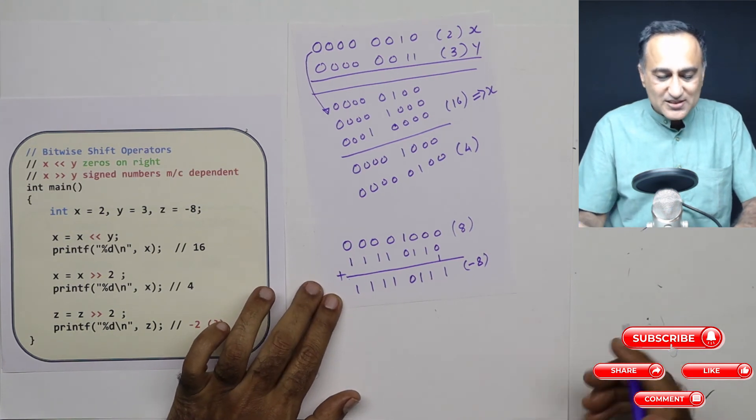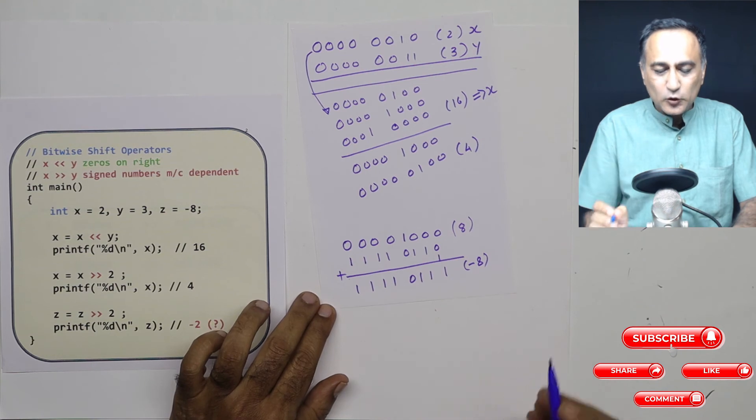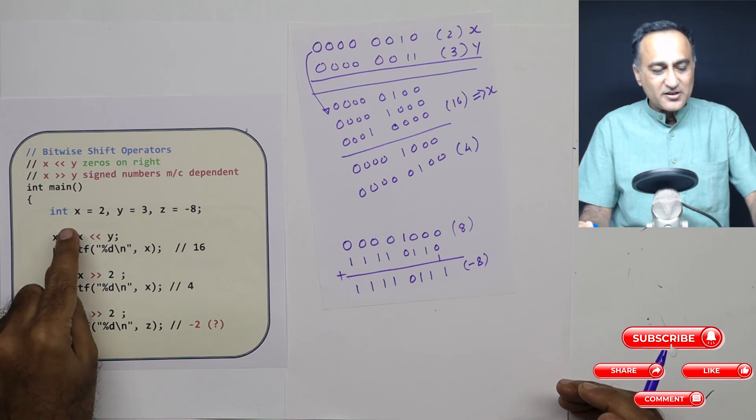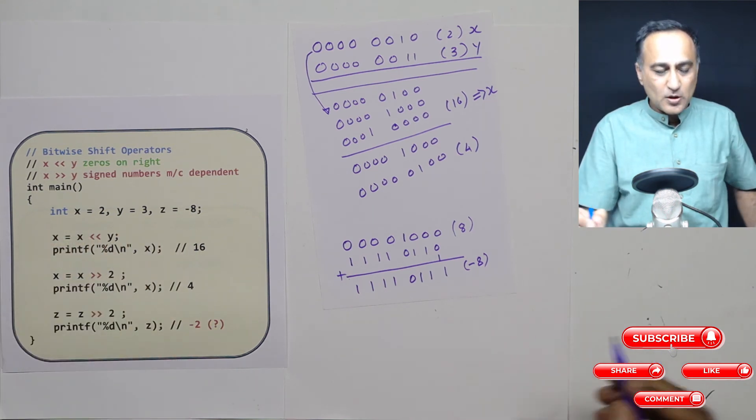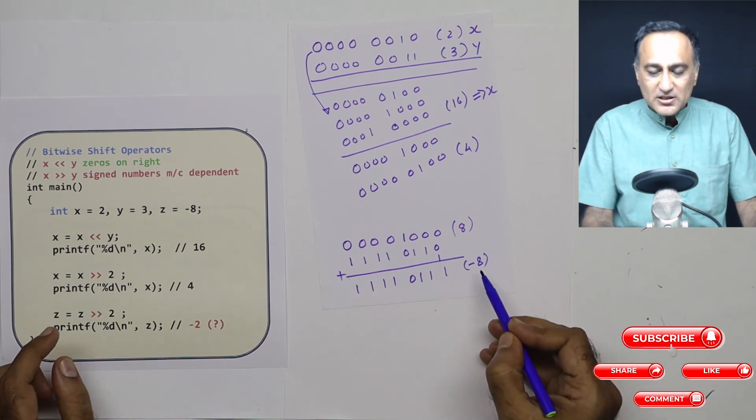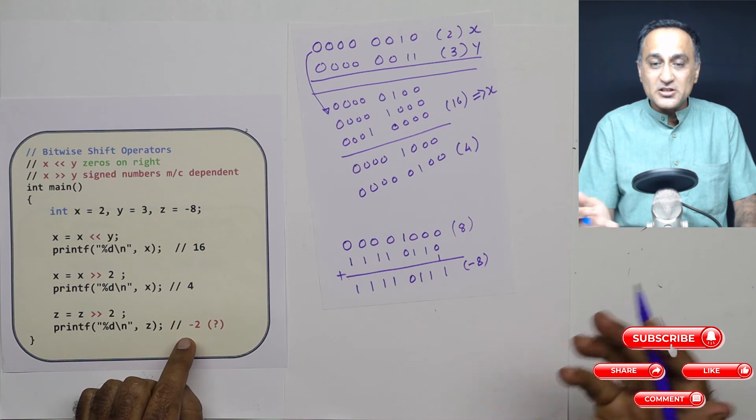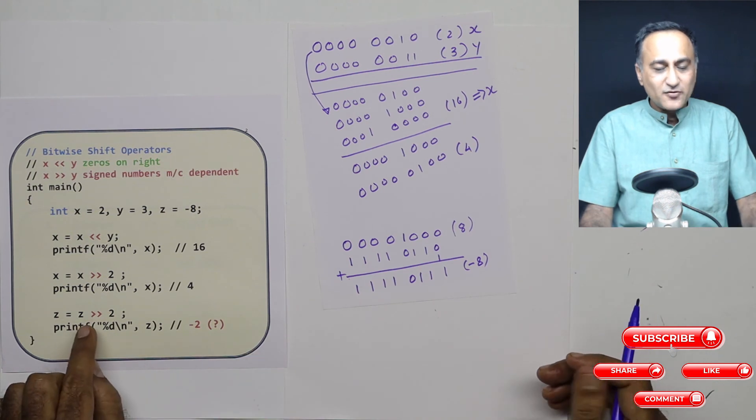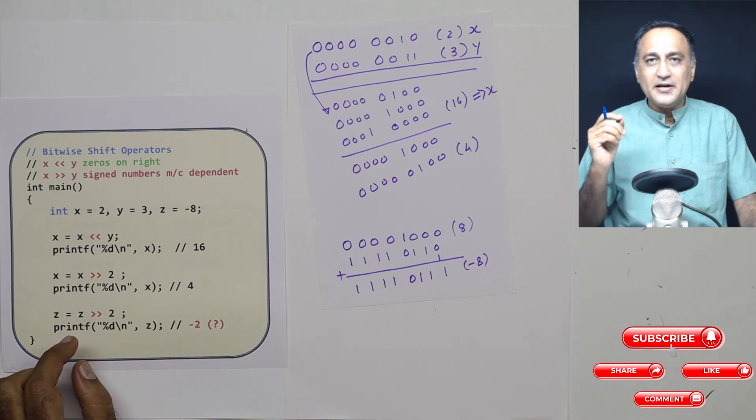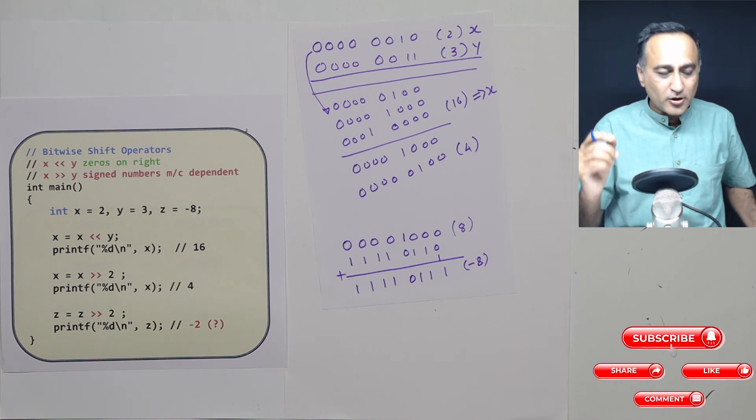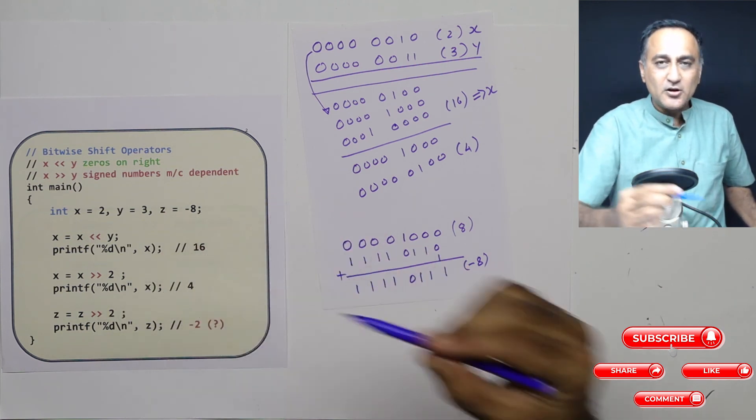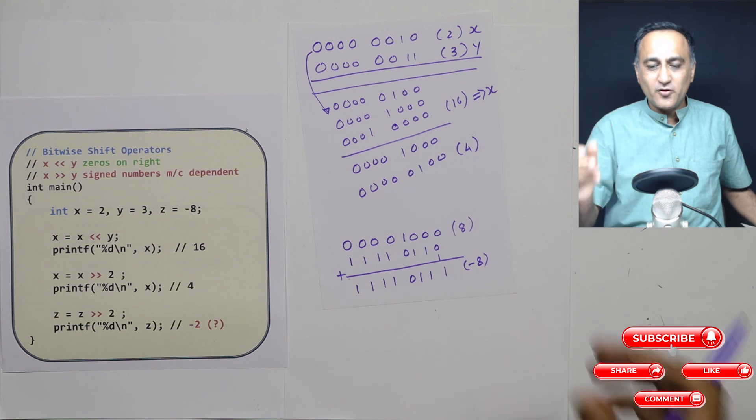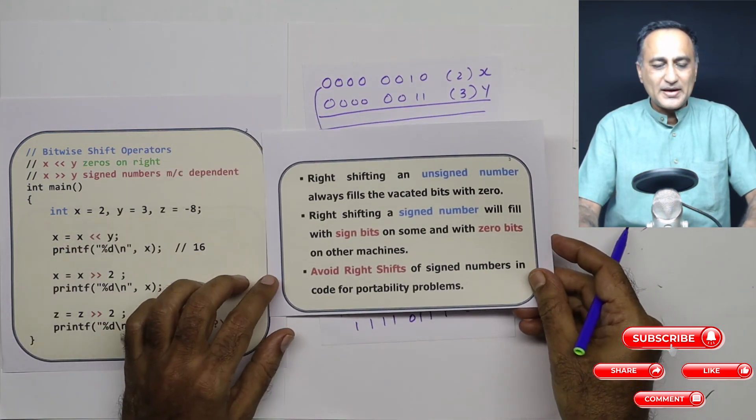Now I'm saying right shift this by two bits. Here is a problem. If I have a negative number and it is represented using a signed representation or two's complement number, if I shift it on some machines, this may become minus two. On some machines, all the vacant bits may get filled up with ones. Right shift of a signed number is machine-to-machine dependent. That's why you need to be extremely careful to not write code trying to right shift a signed number, because you're not sure on which machine it will give you what output.